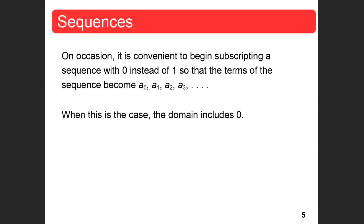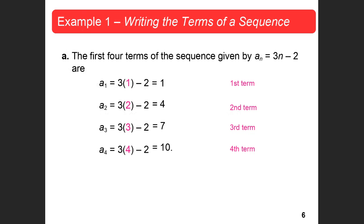On occasion, it is convenient to begin subscripting a sequence with 0 instead of 1, so that the terms become a sub 0, a sub 1, a sub 2, a sub 3. When this is the case, the domain includes 0. Usually we start with 1, but sometimes we do use 0.